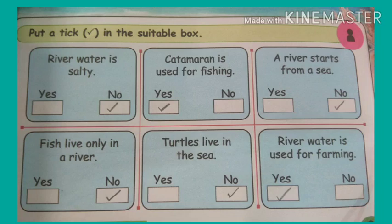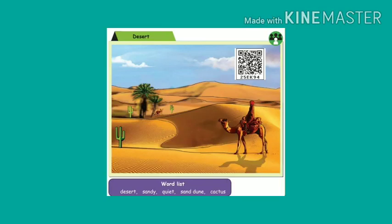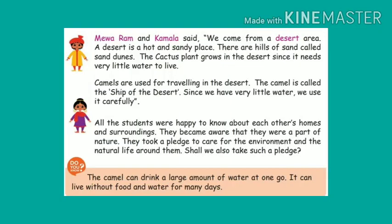Now about the desert. A desert is a hot and sandy place. There are hills of sand called sand dunes. Cactus plants grow in the desert since they need very little water.